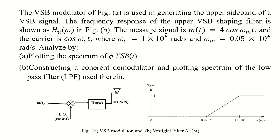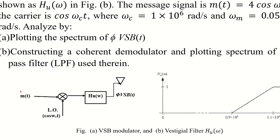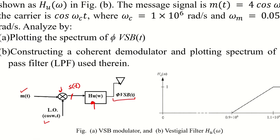In this example we have a VSB modulator shown in figure A, where we have a message signal m and a local oscillator cos(ω_c t), then a multiplier. The output of the multiplier is s, which is m times cos(ω_c t), and afterwards we have a vestigial sideband filter H_0, and finally the modulated signal φ_VSB(t).